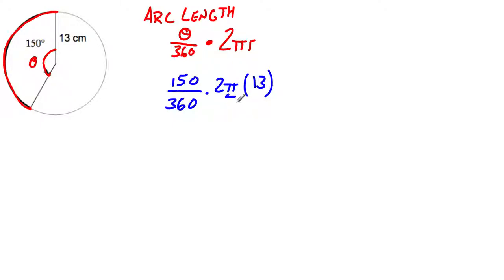So π is not a rational number. So what I'm going to do is I'm going to write that off at the end. I'm going to multiply these fractions. So I get 150 over 360 times 2 times 13, which is 26 over 1, times π. And at the very end, I'm going to include π in this fraction.